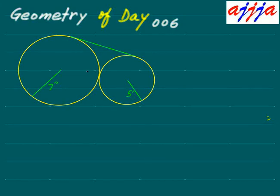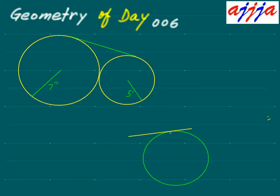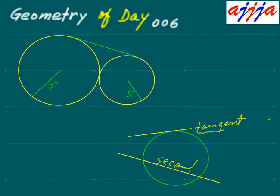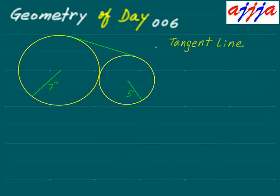Tangent means touch just one time — not twice. So if we have a circle and some kind of line that touches just one time, that's what we call a tangent line. If the line goes through, that's a secant line. So tangent line versus secant line — please remember this. Also, 'tangent' comes from the idea of touchable — like 'tangible' means you can touch that property.